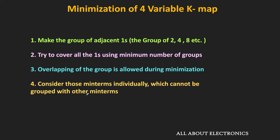By using the minimum number of groups, we can reduce the number of product terms after minimization. Overlapping of groups is allowed during minimization. Finally, consider those minterms individually which cannot be grouped with other minterms. By using these rules, we can easily minimize any 4-variable Boolean function.